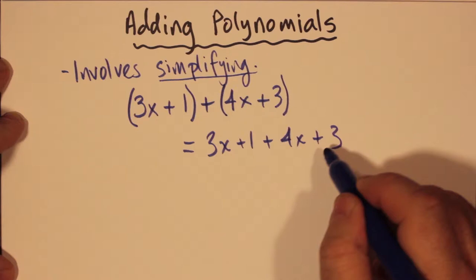The brackets were probably there because I wanted to show you that the 3x plus 1 constitutes one polynomial, and 4x plus 3 constitutes another polynomial. And what I'm trying to do here is to add them together.